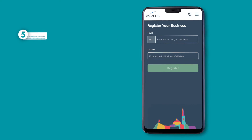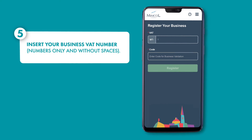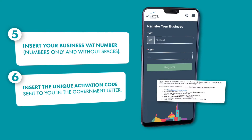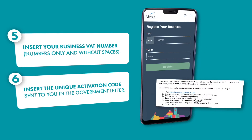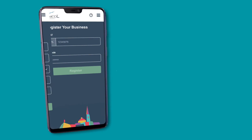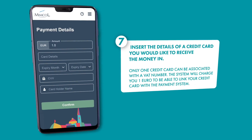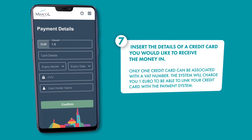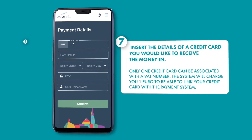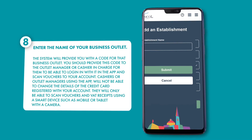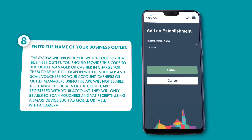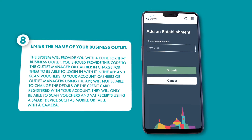Register your business by inputting your business VAT number and the unique activation code sent to you by the government. Provide details of a credit card where you would like to receive the money. Enter the name of your business and the system will provide you with a code for that outlet.